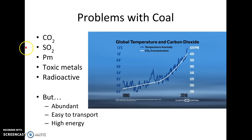You might be wondering — if coal has all these problems, why do we use it? Why is it 32% of our electricity? Well, we have a lot of it. It is the world's most abundant fossil fuel, and the United States has the most of it. It's also really easy to transport, and there's a lot of energy content behind it.